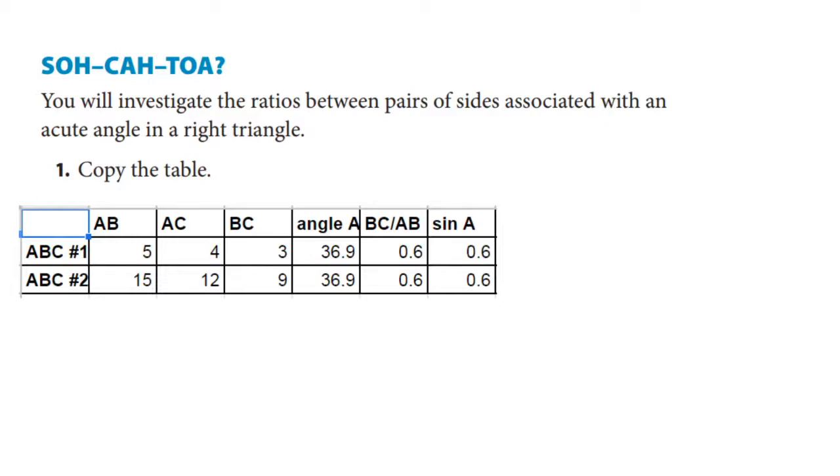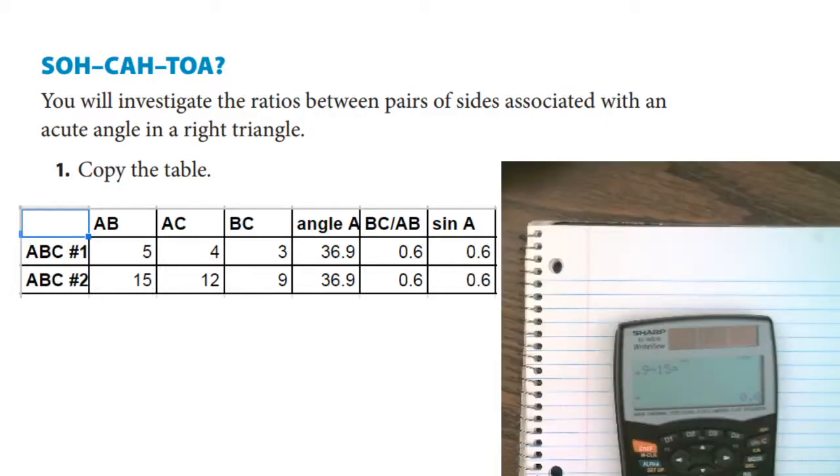Now, what if we take AC divided by AB? So in the first triangle, AC is 4 and AB is 5, so we're going to get 0.8. And what if we take the 12 and divide it by the 15? We also get 0.8. So are these just coincidences, or is there a pattern here? So AC divided by AB actually has a name for it as well, and that's called the cosine of angle A.